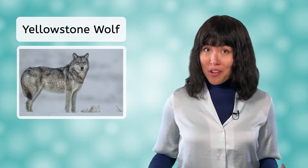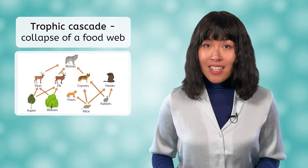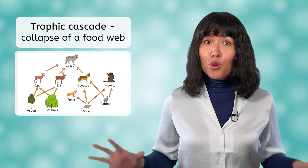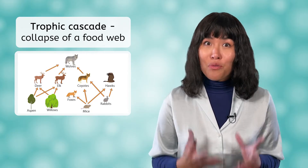Hello, Bea here, and welcome back to biology. Do you remember back in one of our first lessons in this course when we introduced the topic of ecology by taking a look at the wolf population in Yellowstone National Park? When the wolves were removed from Yellowstone, the whole ecosystem collapsed in what is known as a trophic cascade. This is because the wolves were a keystone species, and the whole food web depended on their survival.